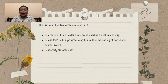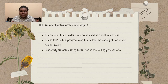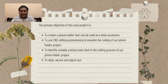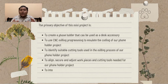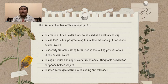Third, to identify suitable cutting tools used in the milling process of our phone holder project. Fourth, to align, secure, and adjust the wood piece and cutting tools needed for our phone holder project. And lastly, to interpret geometric dimensioning and tolerance of our phone holder project.